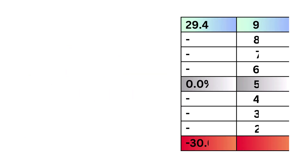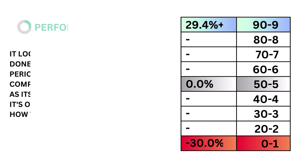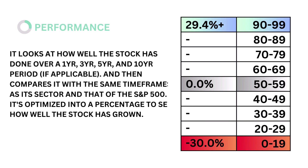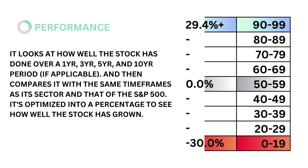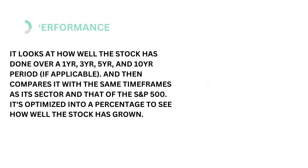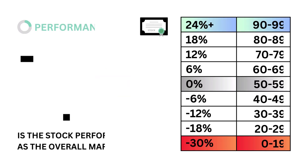First, stock performance. Stock performance looks at how well the company's stock has done over a 1, 3, 5, and 10-year period, and then compares it with the same timeframes as its sector and that of the S&P 500. It's optimized into a single percentage to see how well the company's stock has grown. The models tell us that a performance rate of 0% is considered average. Here's our performance grade.